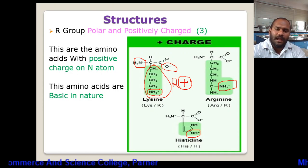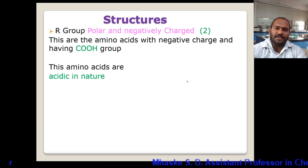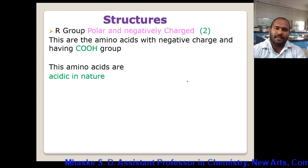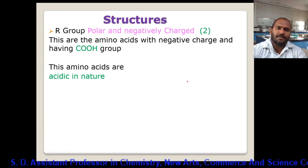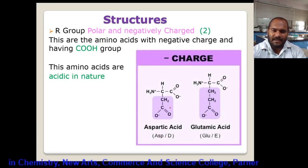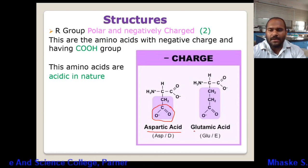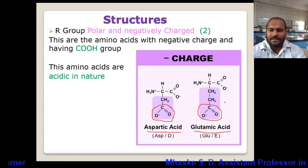The fourth class is R group polar and negatively charged. There are only two amino acids in this category. These amino acids carry a negative charge and have a carboxylic group functionality, making them acidic in nature. In addition to the backbone carboxyl group, there is one more additional carboxyl group in the structure. The first example is aspartic acid, which has a CH2 and carboxylic group side chain.